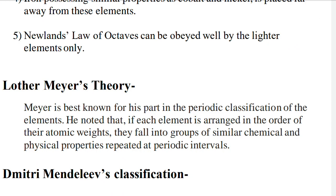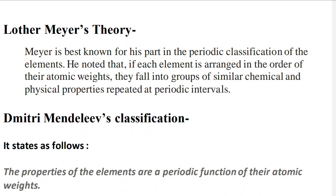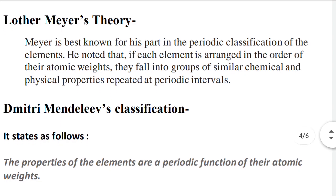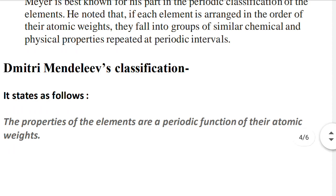Now coming to Mendeleev's classification — which we follow for study as the modern periodic table is based on atomic number. Mendeleev stated that the properties of elements are a periodic function of their atomic weights. Elements are arranged with properties recurring periodically based on increasing atomic weight.